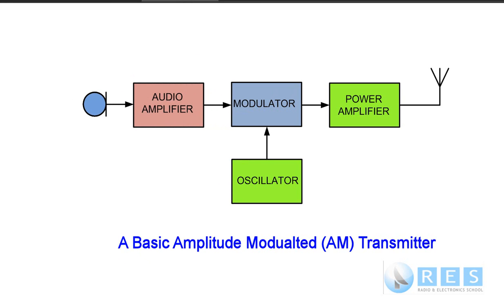We've learned that we can transmit a radio signal if we just have an oscillator connected to an antenna, and we can transmit messages by turning that oscillator on and off in a telegraphy transmitter. If we want to transmit voice we need another stage called a modulator. Now let's talk about the principle of modulation first.